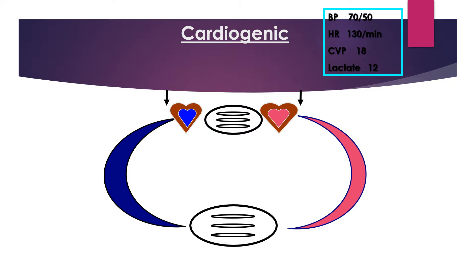In cardiogenic shock, blood pressure is low, heart rate is high, CVP is high because the heart is not pumping and blood is pooling into the venous capacitance section, and lactate is raised.